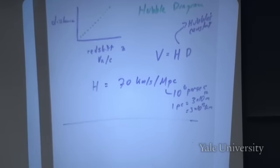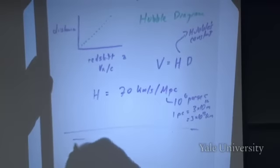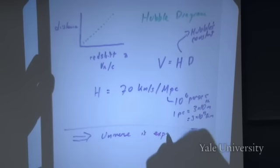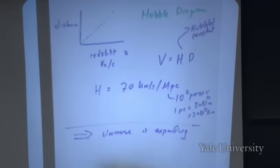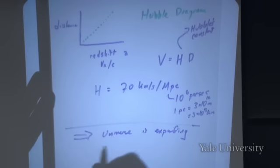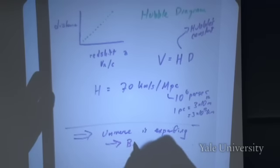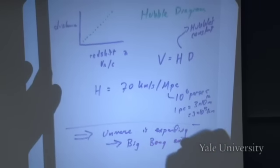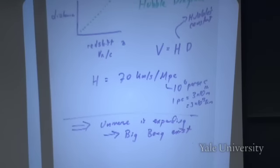This diagram and this relationship basically tell you that the universe is expanding. And because of that, along with other evidence, it tells you indirectly that the Big Bang exists. So this is the basis of Big Bang cosmology. We'll talk about the Big Bang on Tuesday — we'll have a whole big question-and-answer session, so bring all your questions about the Big Bang and cosmology.